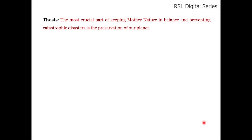The third element is the thesis — this is the main point, the most crucial part. For example: 'The most crucial part of keeping mother nature balanced and preventing catastrophic disorders is the preservation of our planet.' This means we have to keep our mother nature in balance and prevent catastrophic disasters — indirectly telling the reader that it is the responsibility of human beings to preserve our planet.